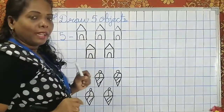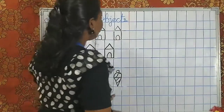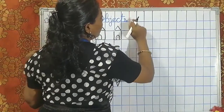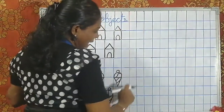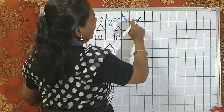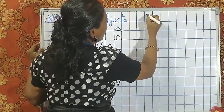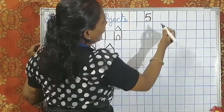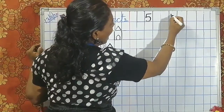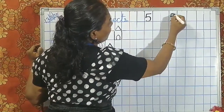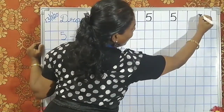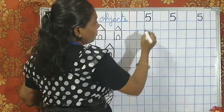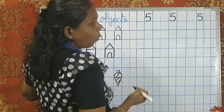Now let's write number 5. Children, to write number 5, what you will do? You leave two squares from the margin. This red line is the margin. After the red line, leave two squares and write number 5. Again, leave two squares and write number 5. Leave two squares and write number 5. Now, below you have to leave one square and write.